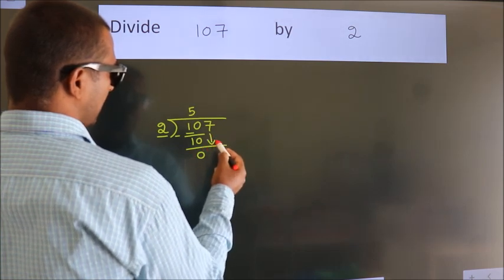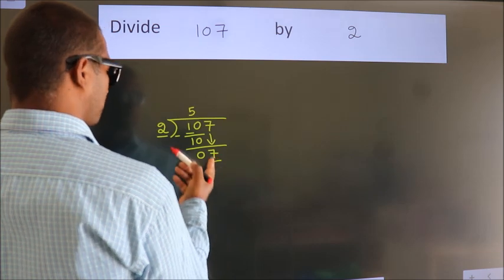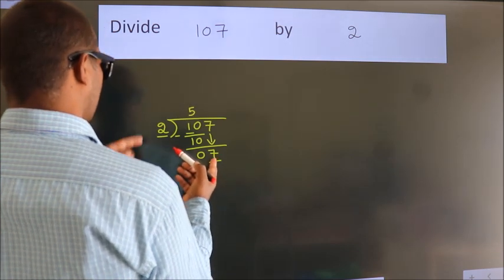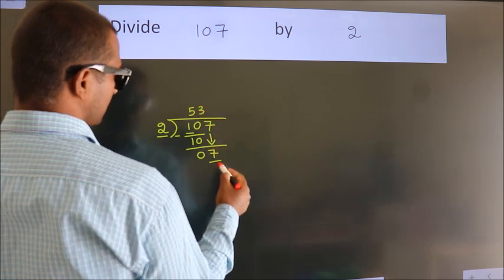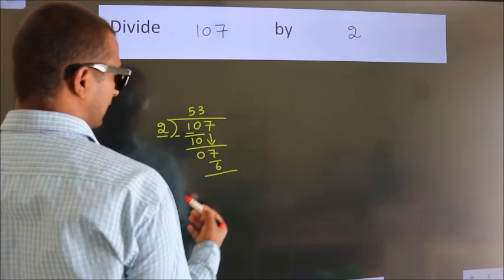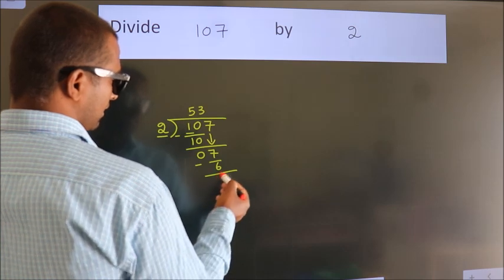bring down the beside number. So 7 comes down. A number close to 7 in the 2 table is 2 times 3, which is 6. Now we subtract and get 1. After this,